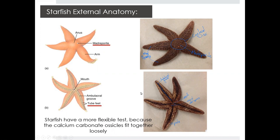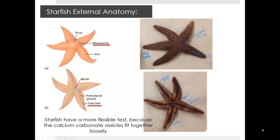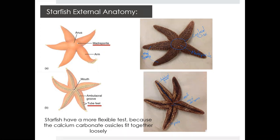When we look at the ventral side of a starfish, in the center there's a mouthpiece that the starfish uses to eat its prey. There are ambulacral grooves that run along the center of each arm, and then tube feet that run along the sides of each ambulacral groove. Starfish are fairly flexible because the calcium carbonate ossicles on the outside fit together very loosely, so even though they have this rigid structure, they're still able to move around fairly flexibly.